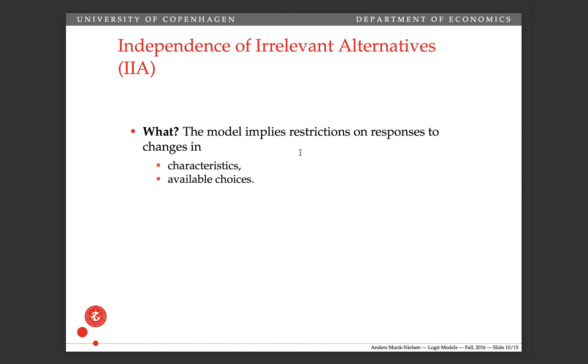The model is a very strict mathematical model and the model implies some restrictions on how people can change their behavior, namely the choice probabilities, when we change characteristics or available choices, for example. It could be other things, but these are the main ones.